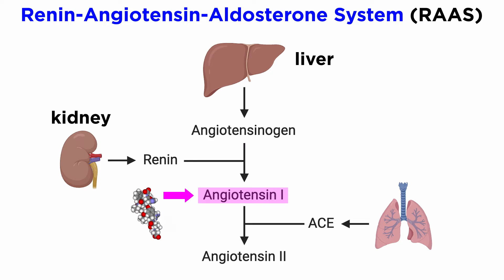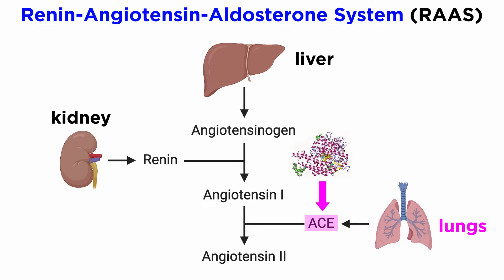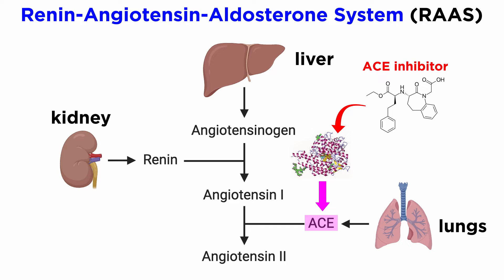As mentioned, this version of angiotensin is inactive and requires further metabolism. Following circulation in the blood, angiotensin-1 will be converted to angiotensin-2. This reaction is catalyzed by angiotensin-converting enzyme, or ACE, produced in the lungs. This is the level at which ACE inhibitors showcase their pharmacology.